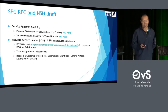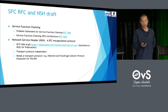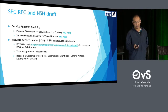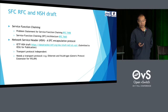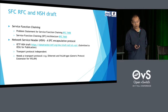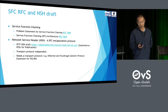IETF has defined a service function chaining architecture by standard RFC document, and has also documented the problem statement for service function chaining. NSH is still a draft, but recently it has been submitted to IESG for publication, which means it will be approved as an RFC. NSH is transport protocol independent, so we need a transport protocol to carry NSH packets — for example, Ethernet or VXLAN.